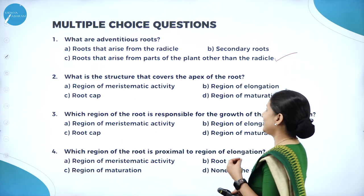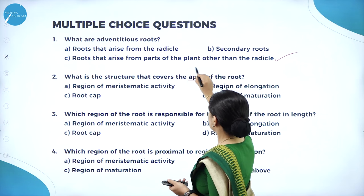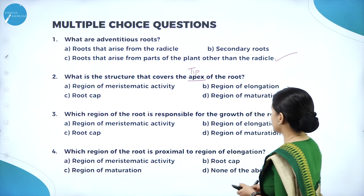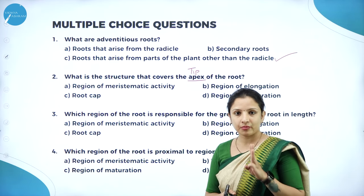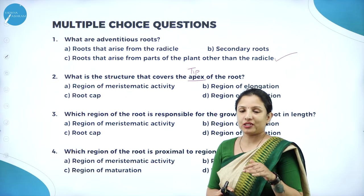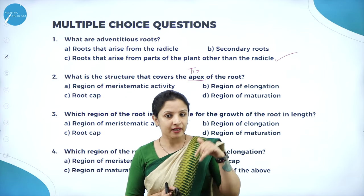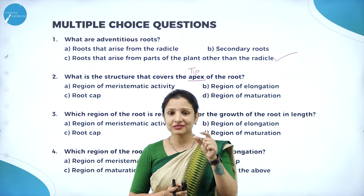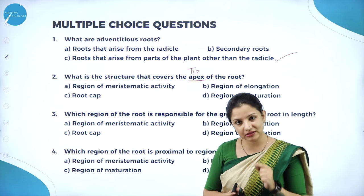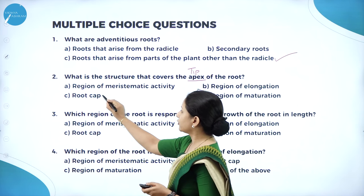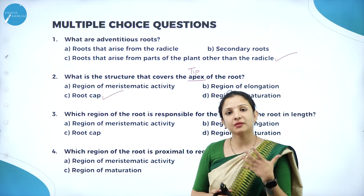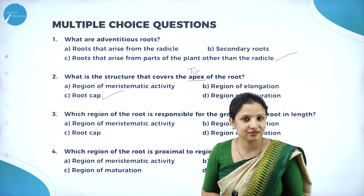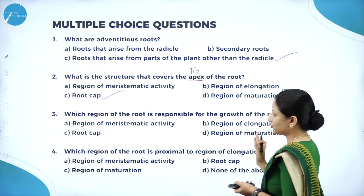What is the structure that covers the apex of the root? The apex means the tip. Roots contain three main regions: the region of meristematic activity (actively dividing cells), the region of elongation above that, and the region of maturation above the elongation. The tip of the meristematic region is protected by the root cap, which looks like a thimble and protects the young meristematic cells as the root grows deep into the soil.